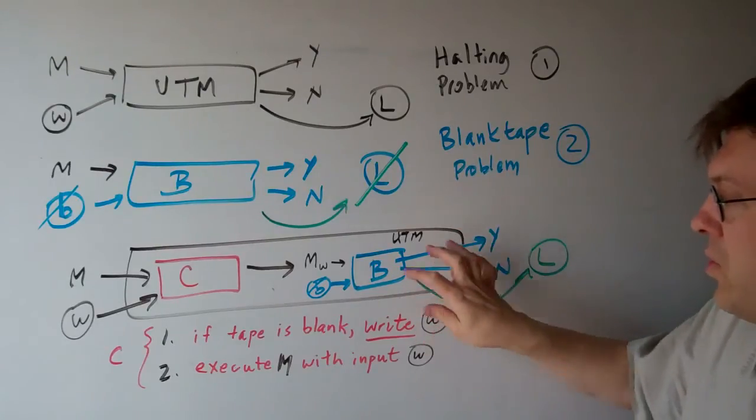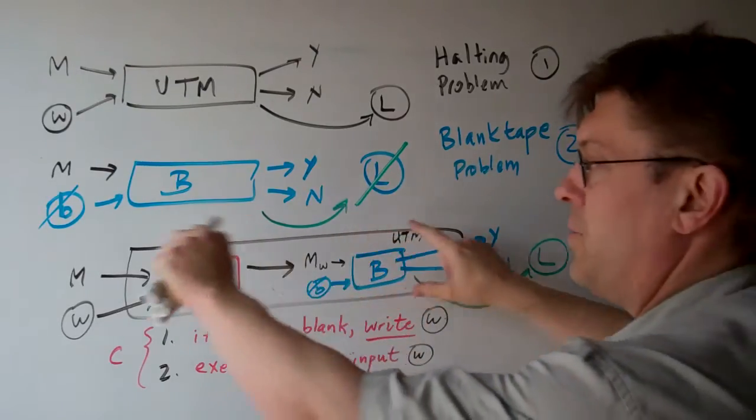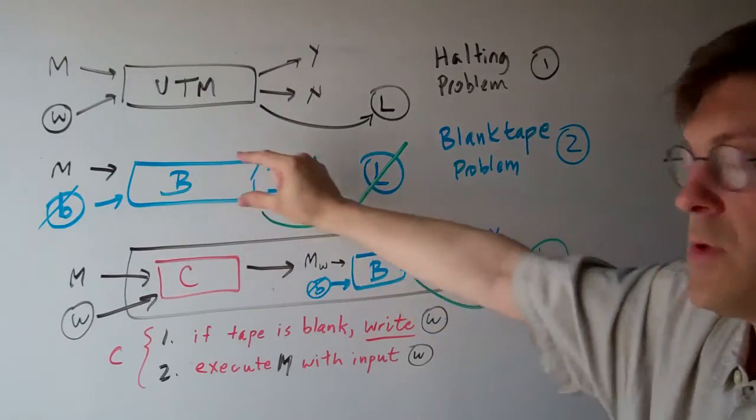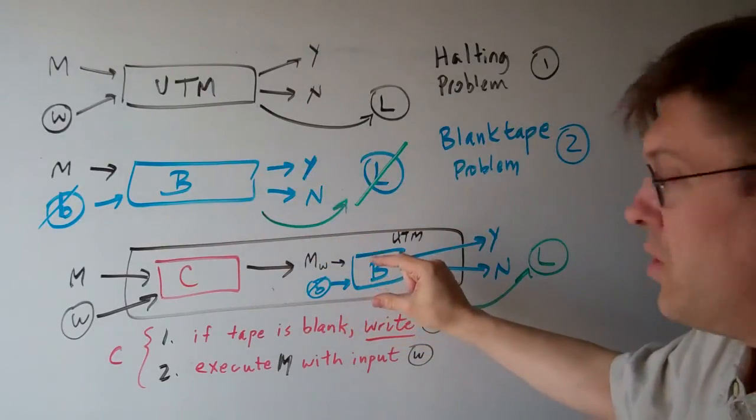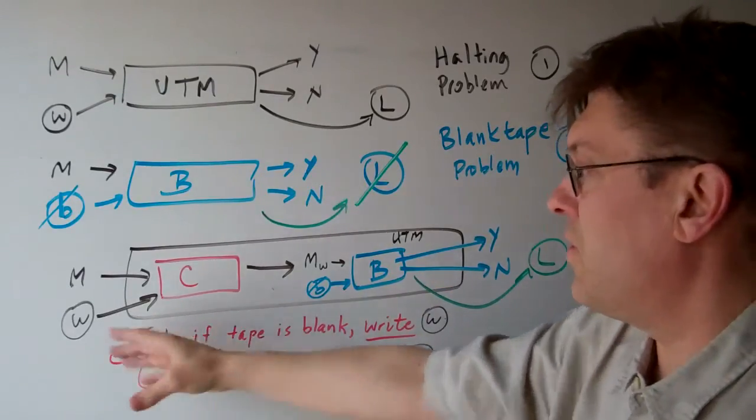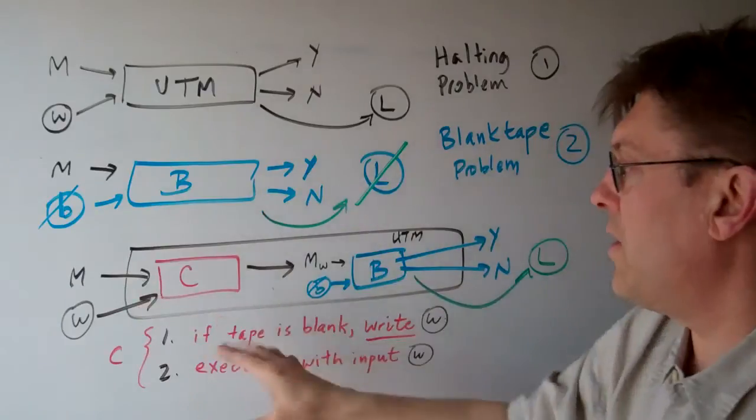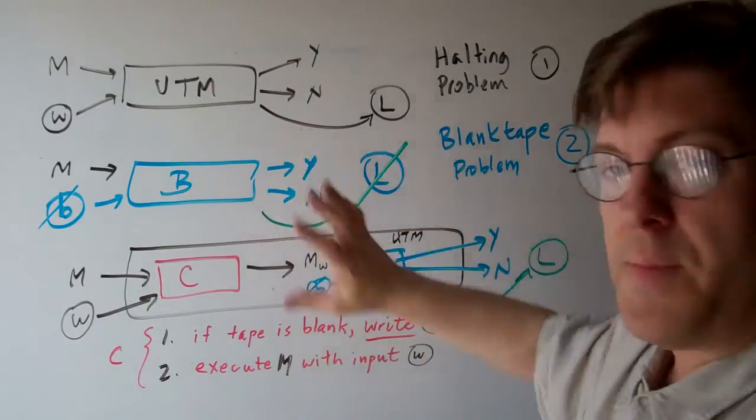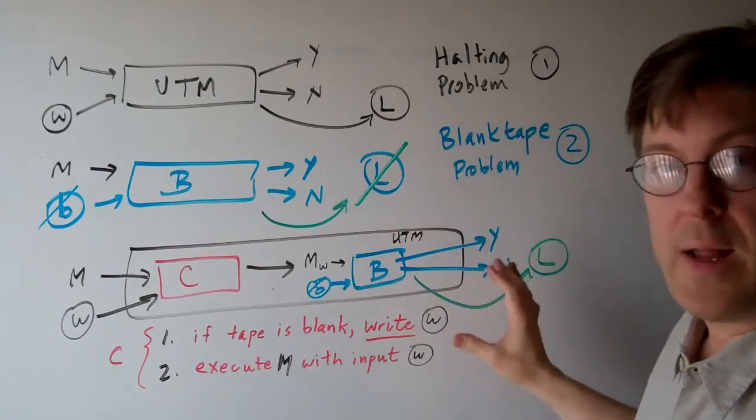And the way we do that is we create a big box, which is the old problem, and a small box, which is the new problem that we're trying to prove, and a conversion box, which converts the problem we know how to solve into this problem that we're not quite sure of. So I'm sure that something on the test is going to have this form on it.